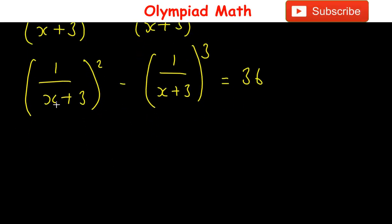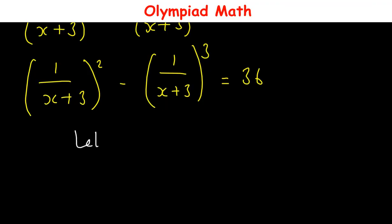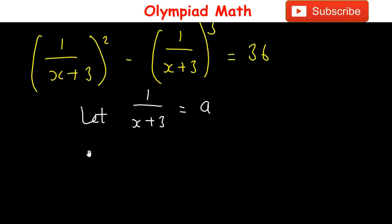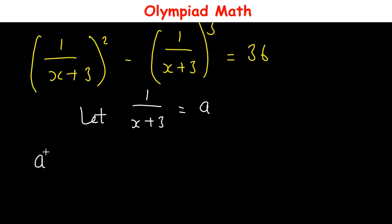Looking at this, we let 1/(x+3) = a, such that this equation then becomes a² - a³ = 36.